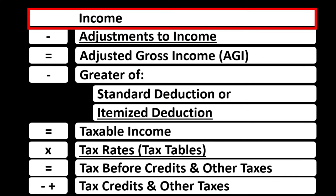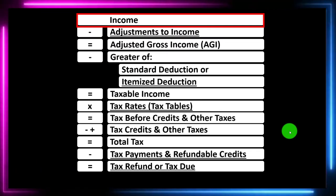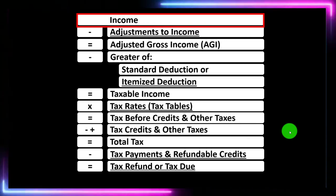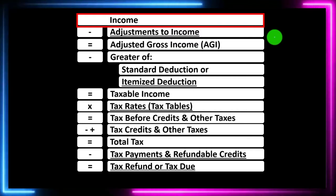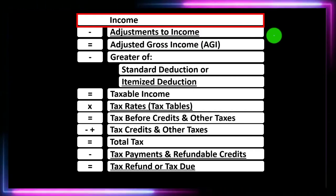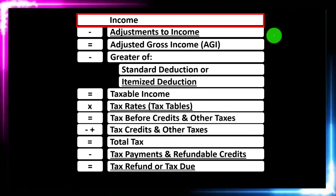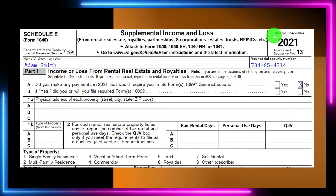The income tax formula is focused on line one income, although we would have a separate Schedule — basically an income statement with income and expenses. The expenses are basically deductions, and the net then rolls into line one income of the income tax formula, as well as page one of Form 1040.